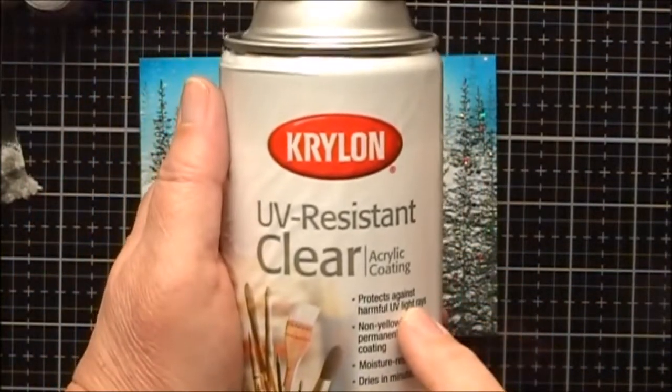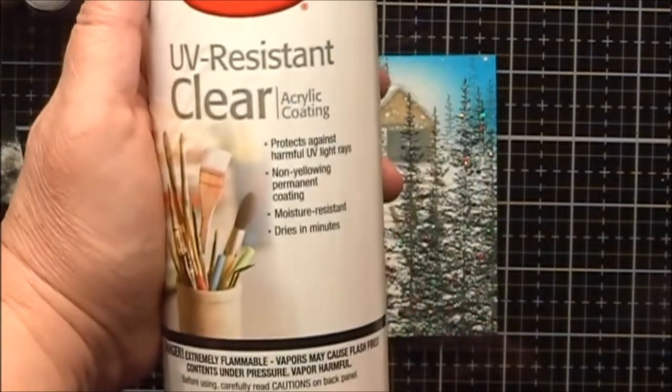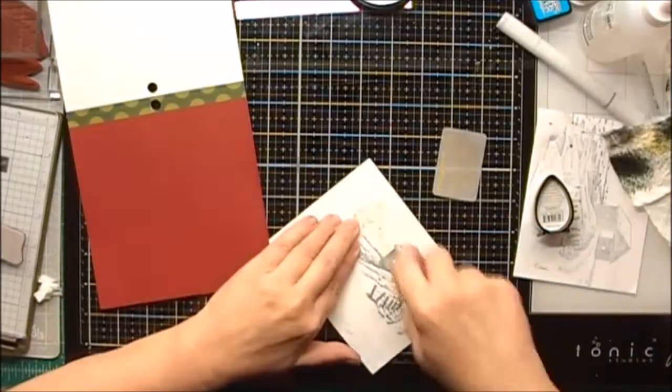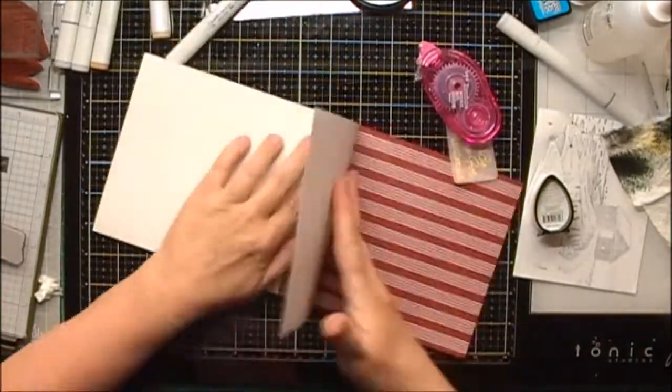I just went out and I sprayed it with a light coating of Krylon UV Resistant Clear Acrylic Coating. And now I'll put my scene onto a mat.